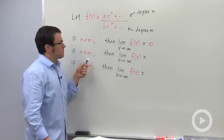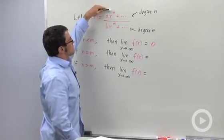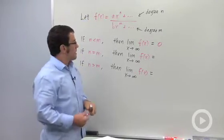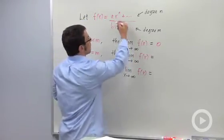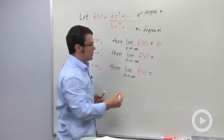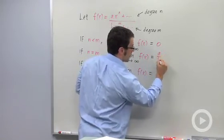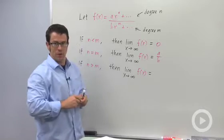If the degrees are equal, so say this is a cubic and this is a cubic, then the limit is actually going to be the fraction of their leading coefficients, a over b, and that's always true.